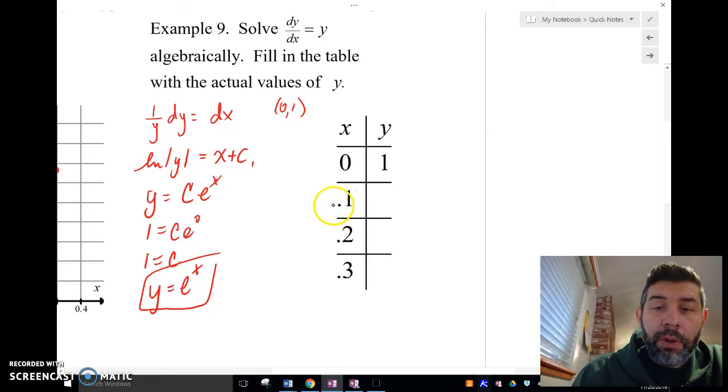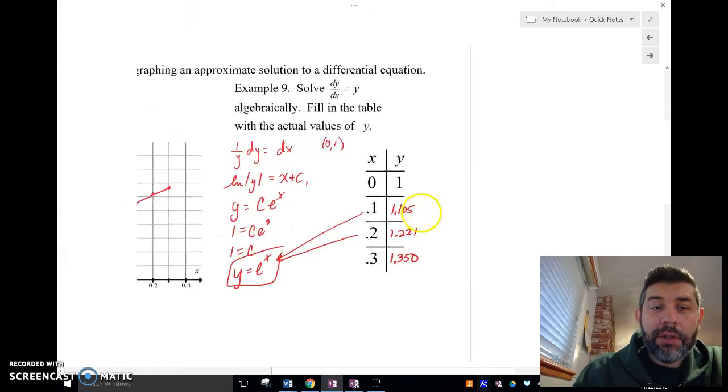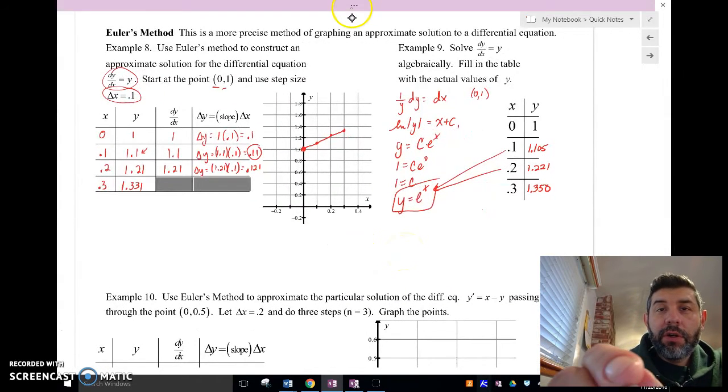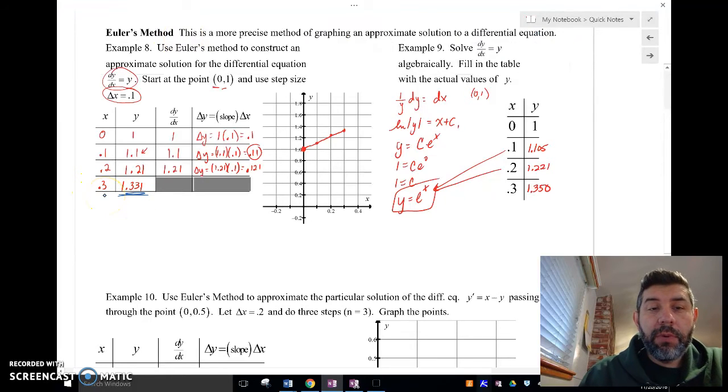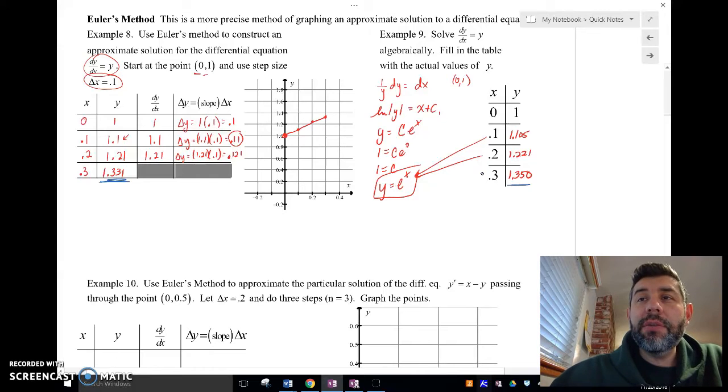So if I plugged in 0.1 into here, that's going to give me an approximate value of 1.105. If I plugged in 0.2 in for y equals e to the x, it's going to give me an approximation of 1.221. And 0.3 is going to give me an approximation of 1.350. Now, how close did I come in my Euler's method approximation? Pretty close, right? So here, we notice that here I got, for 0.3, I got 1.331. And for my actual, after I solved it, I got 1.350. So I'm pretty close. So Euler's method is a way to approximate a particular solution of a differential equation.